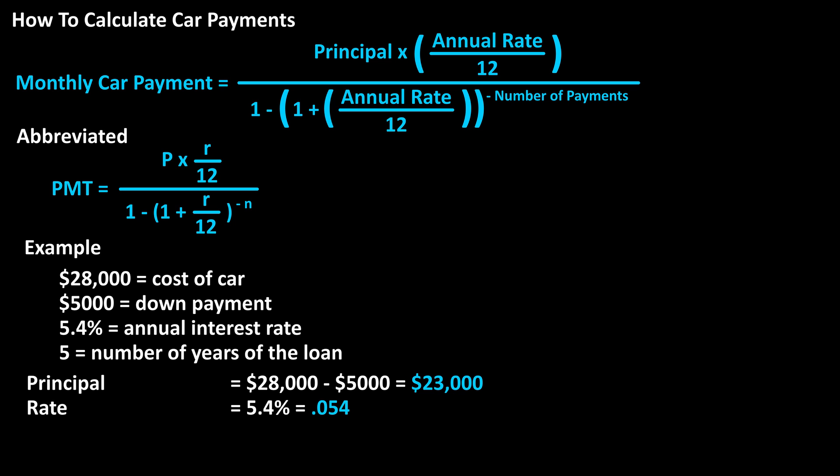The annual interest rate is 5.4%, which we must convert to a decimal by dropping the percent sign and moving the decimal two places to the left to get 0.054. And the total number of payments over the life of the loan is 12 months times five years, which equals 60 total payments.